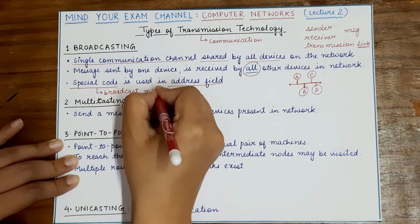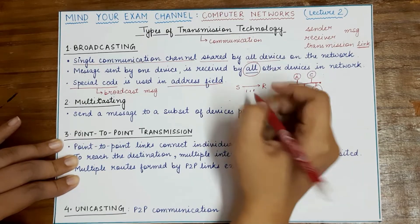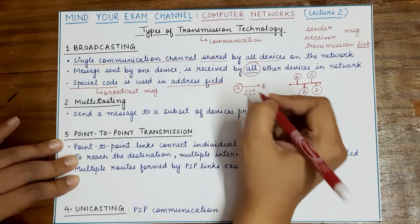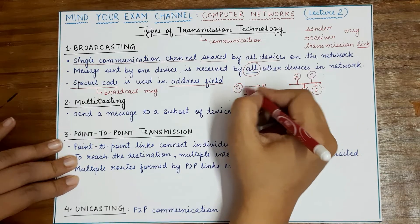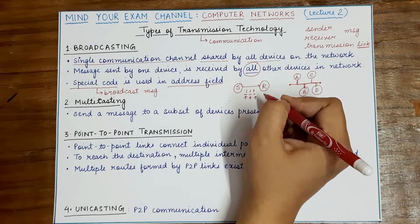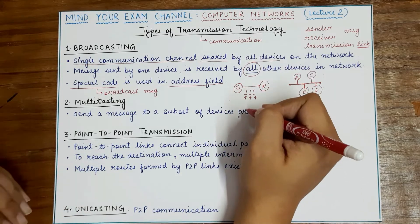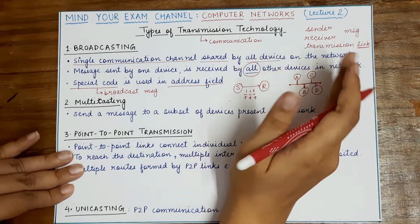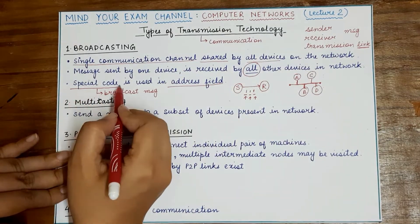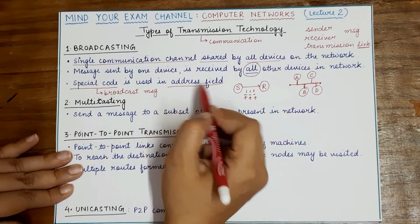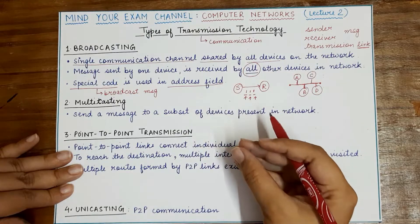Generally, when a message is sent from the sender to the receiver, some intermediary nodes might be present in between. When these intermediary nodes check the destination address and find it is not intended for themselves, they simply forward the message along the path which leads to the receiver. But when devices find the special broadcast code in the destination address field, they will accept the packet, knowing it is intended for them as well as everybody else.